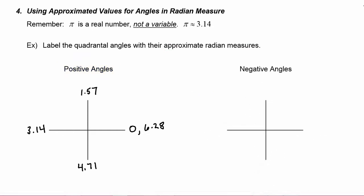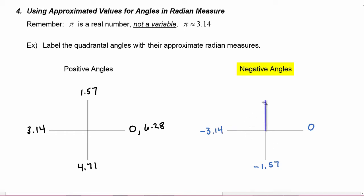Now we can use these calculated values to fill in the negative angle graph. We start at zero. At negative pi over 2, we approximate negative 1.57. Negative pi is approximately negative 3.14. Negative 3 pi over 2 is approximately negative 4.71. And coming all the way around the circle in the negative direction is approximately negative 6.28.